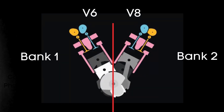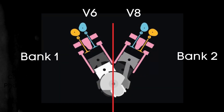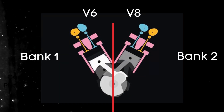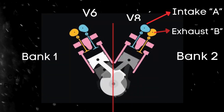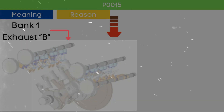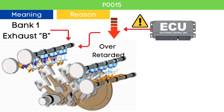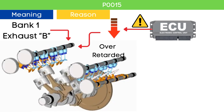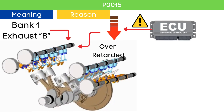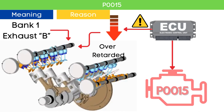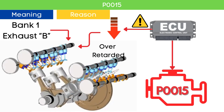For dual overhead camshaft, or DOHC, engines, there are two camshafts per bank — intake and exhaust. When the ECU detects that the bank 1 exhaust camshaft position is over-retarded compared to the targeted cam angle, it triggers the P0015 code.